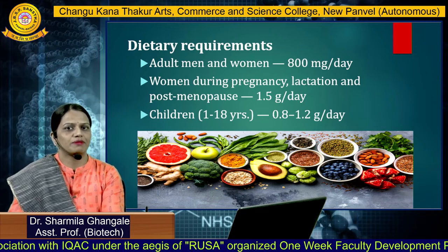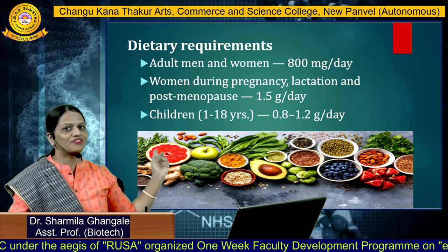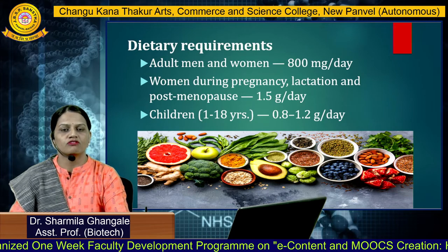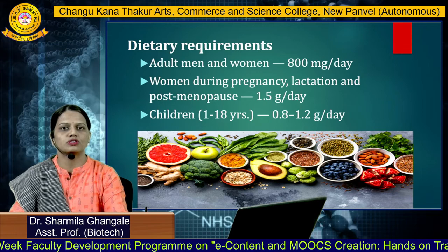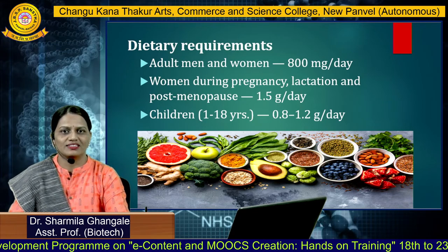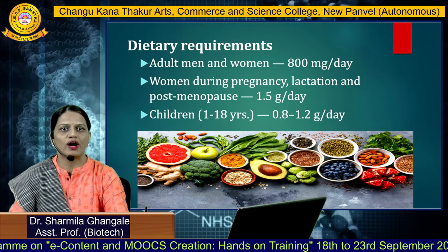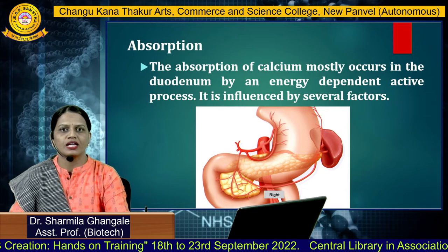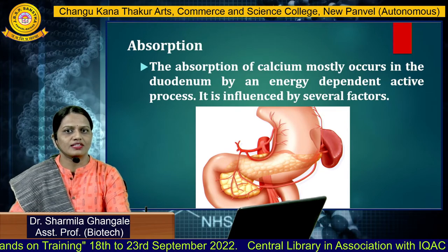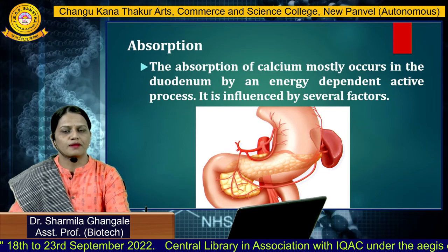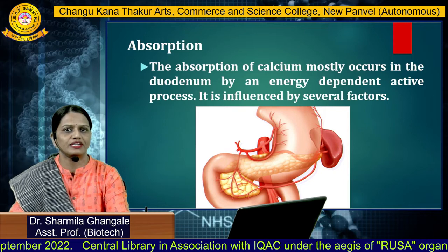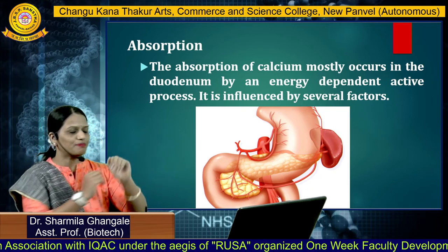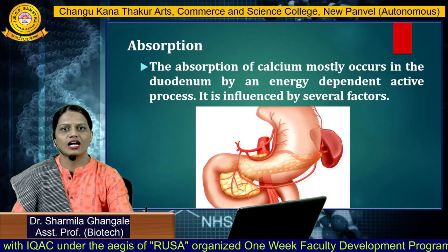As far as dietary requirement is concerned, the picture itself reflects different dietary sources. Adult men and women require 1000 mg per day. Women during pregnancy, lactation, and post-menopause require 1.5 gram per day. Children in the age group 1 to 18 years require 0.8 to 1.2 gram per day. Regarding absorption, calcium is primarily absorbed in the duodenum by an energy-dependent active process, influenced by several factors. The duodenum is a major part of the digestive system.